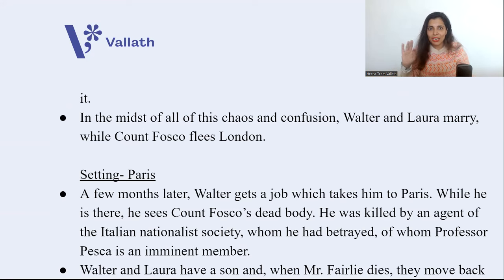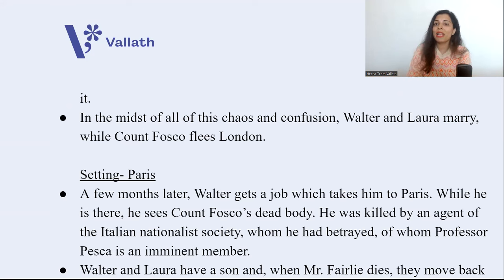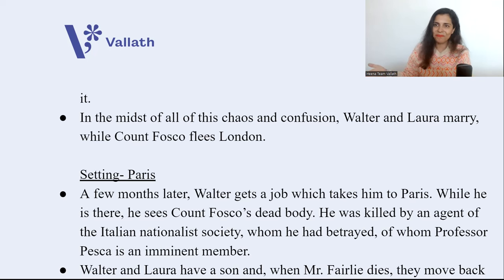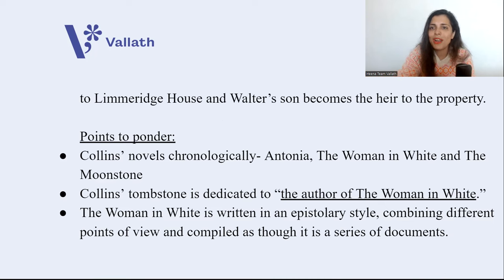While Count Fosco flees London to Paris, a few months later Walter gets a job which takes him to Paris. While passing a museum, he sees a dead body — it is Count Fosco. Count Fosco was killed by an agent of the Italian nationalist secret society whom he had betrayed, of whom Professor Pesca — Walter's friend — is an eminent member. At the end of the story, Walter and Laura have a son together, and when Mr. Fairley dies, they move to Limeridge House and Walter's son becomes heir to the property.